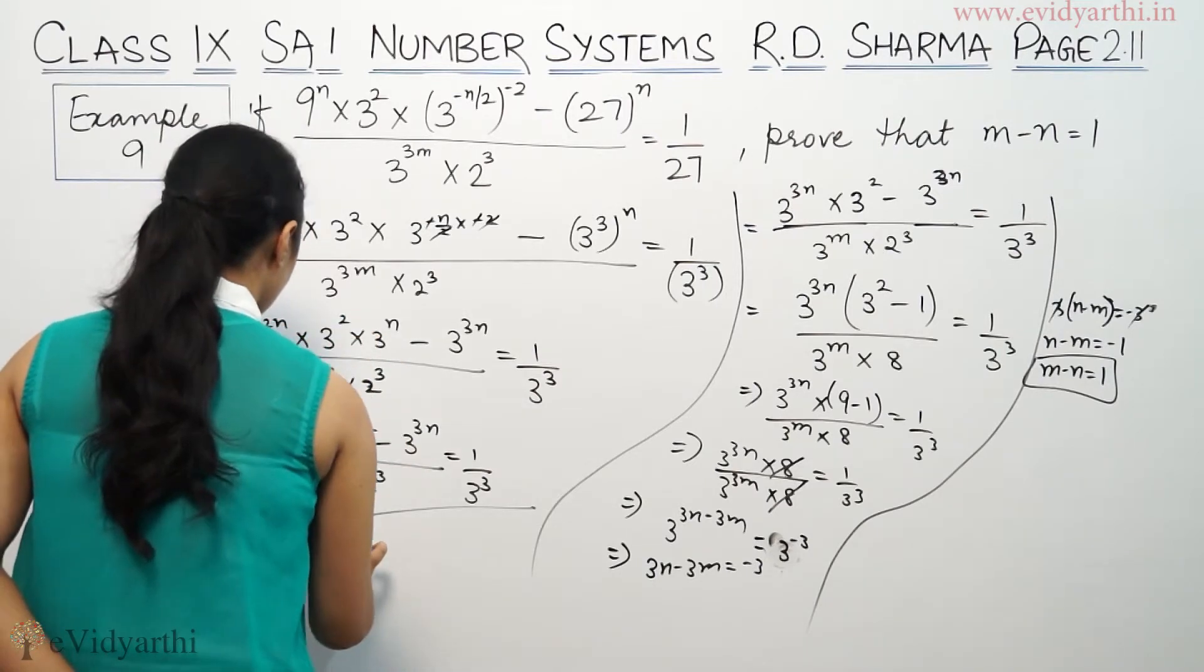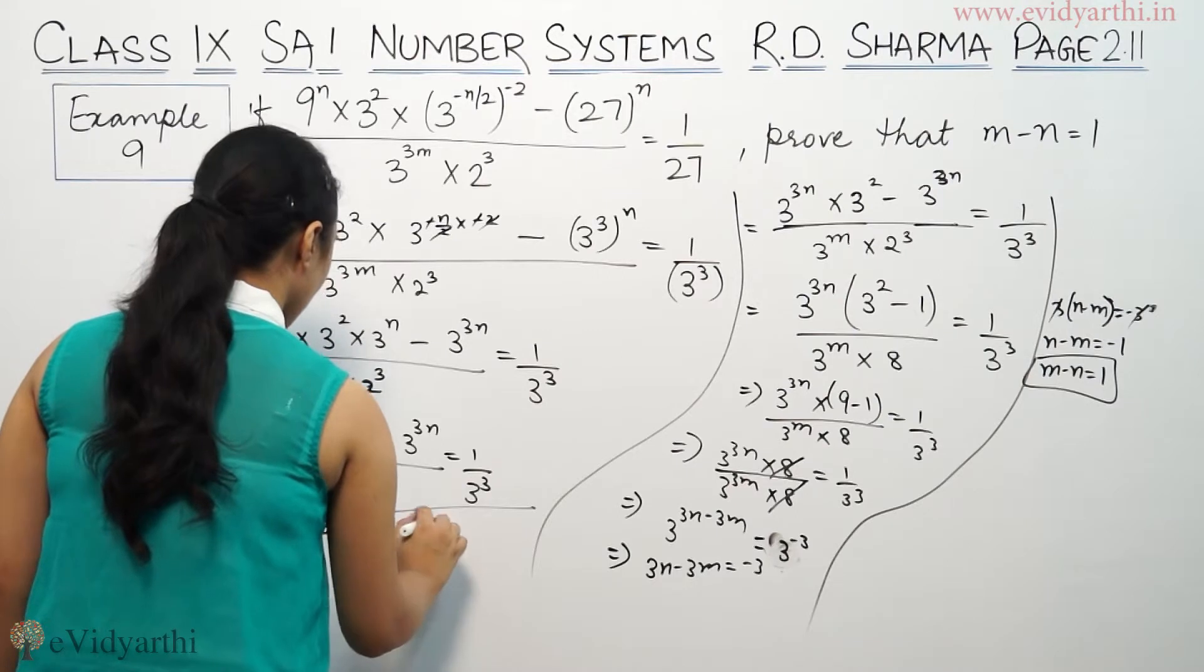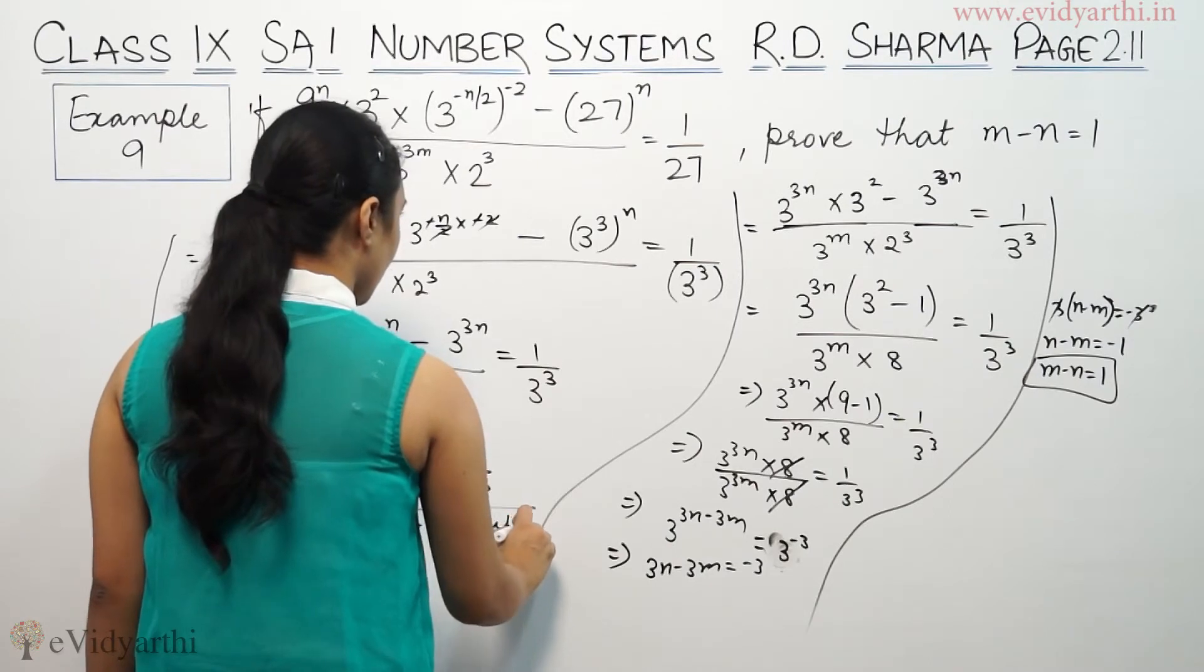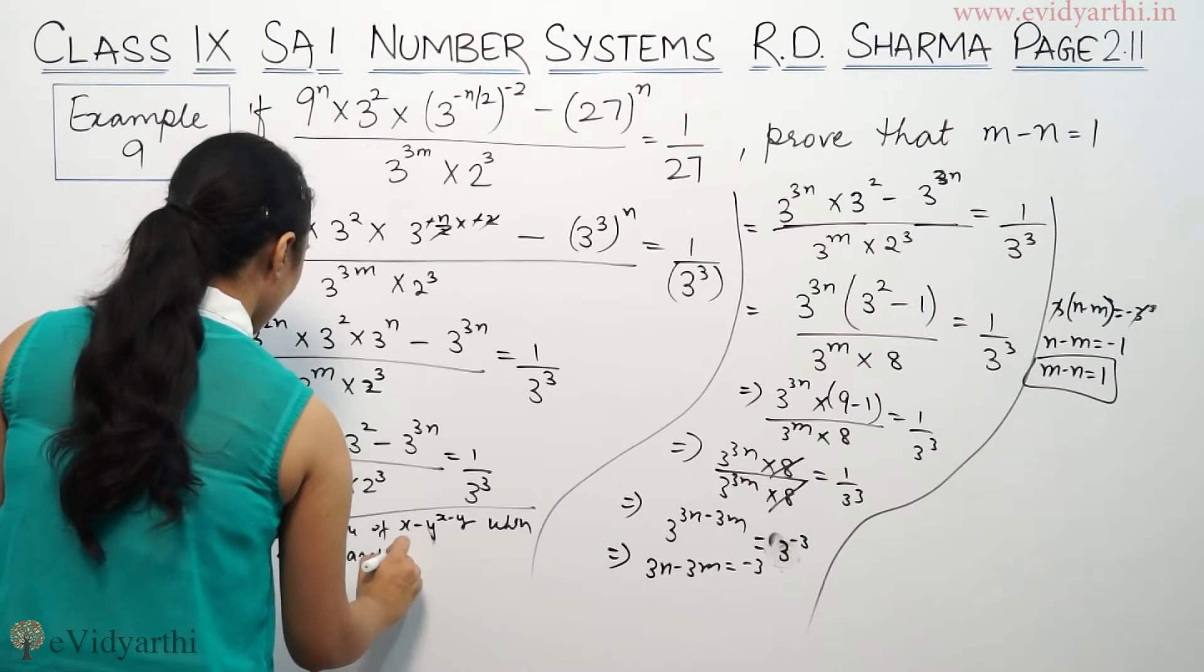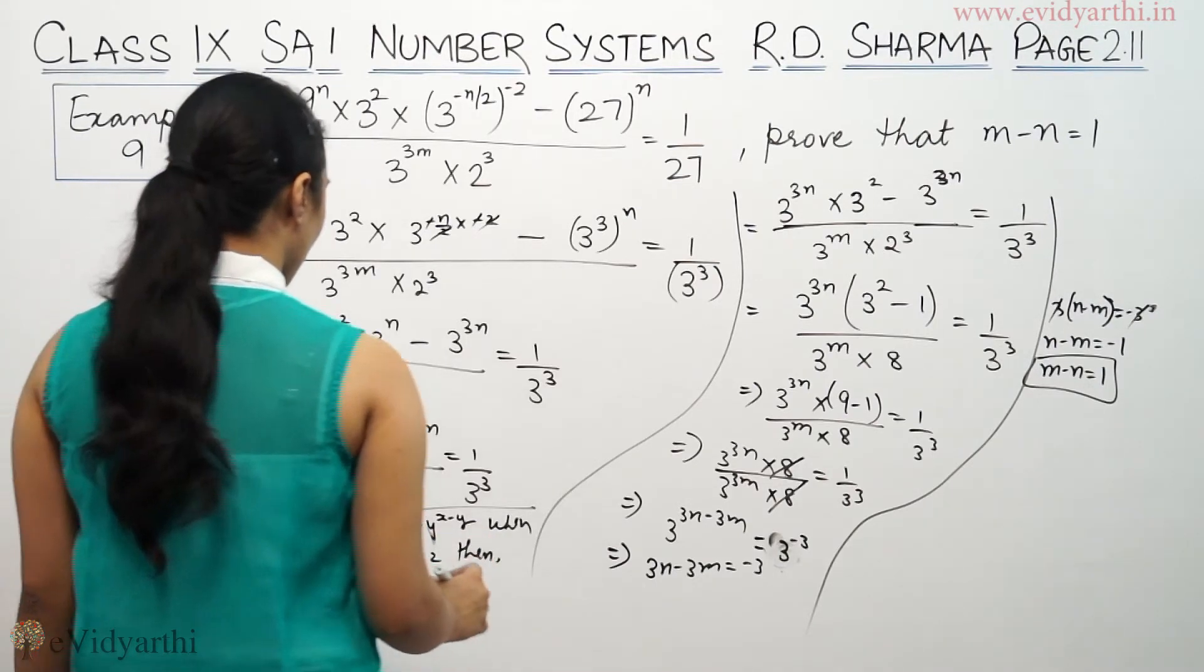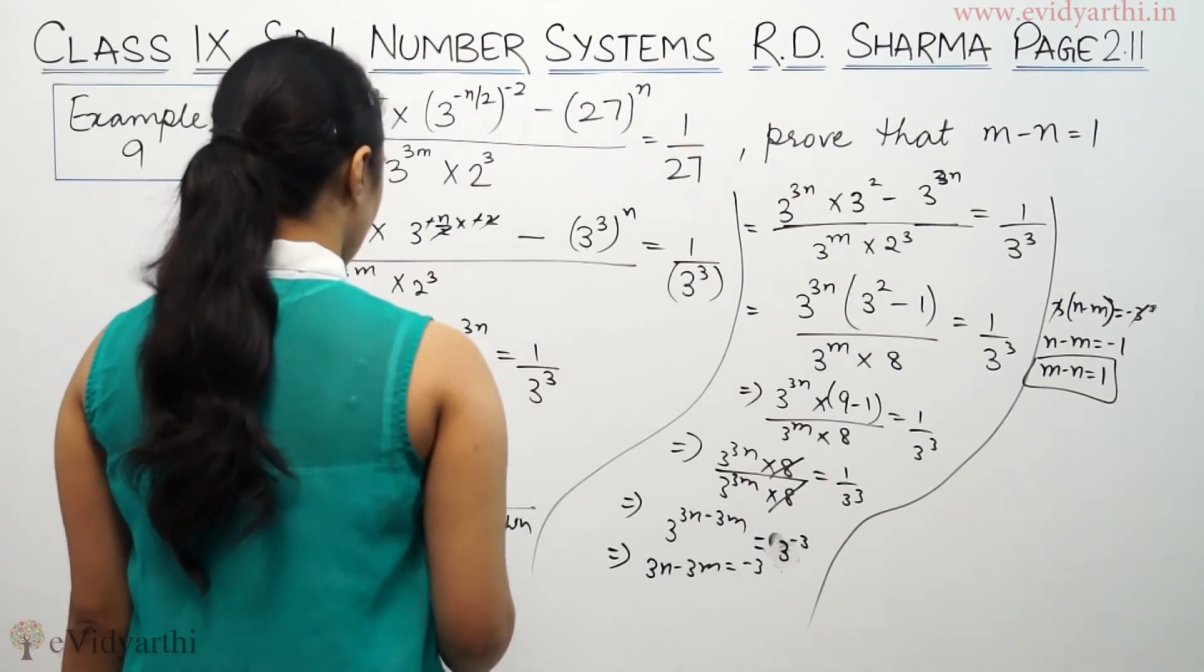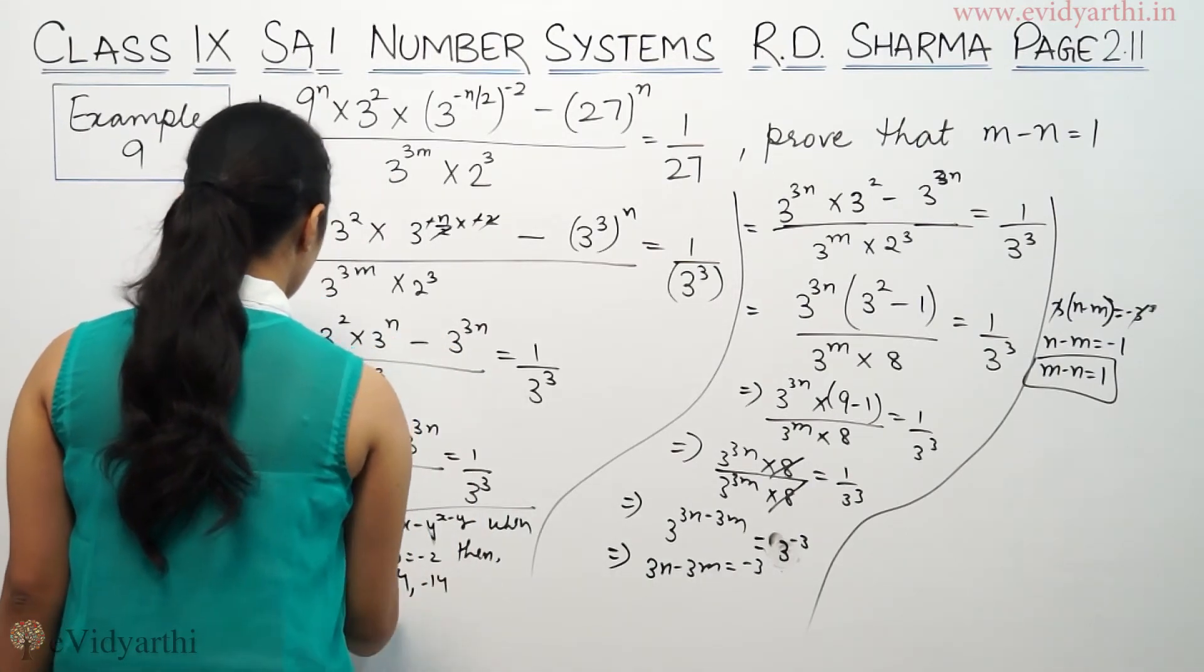Find the value of x^(-y) where x is 2 and y is minus 2. The options are 18, minus 18, 14, minus 14. You have four options here.